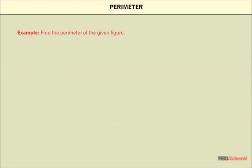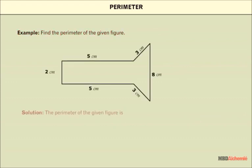Now, let us find the perimeter of the given figure. The perimeter of the given figure is the sum of all the sides, that is, 2 plus 5, plus 5, plus 5, plus 3, plus 3, plus 8, which is equal to 26 centimeters.